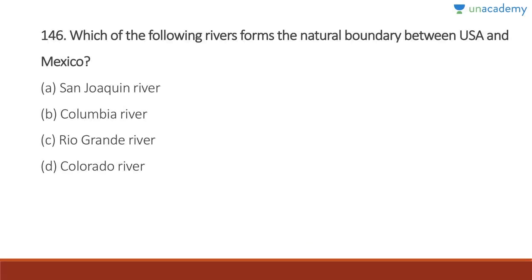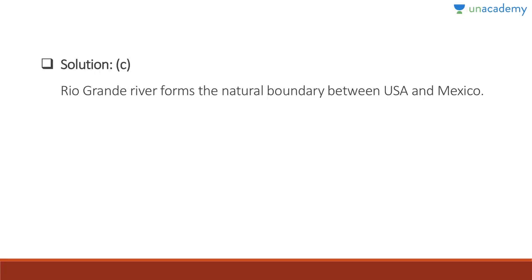Question 146: Which river forms the natural boundary between the USA and Mexico? The answer is the Rio Grande. The Rio Grande River forms the natural boundary between the USA and Mexico.